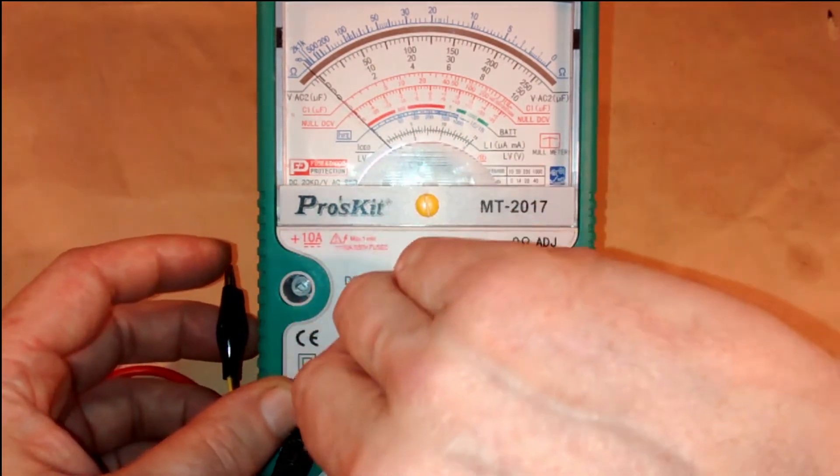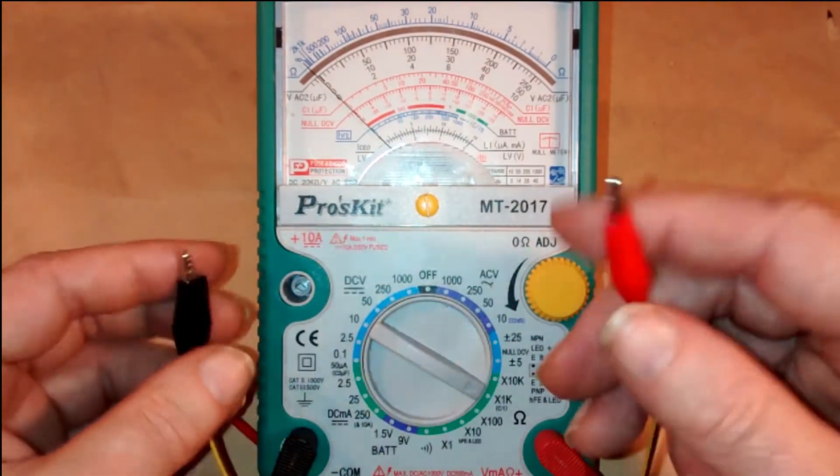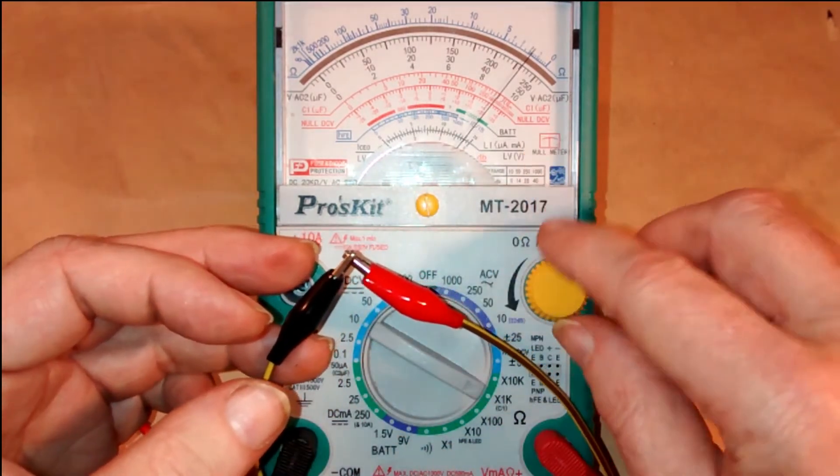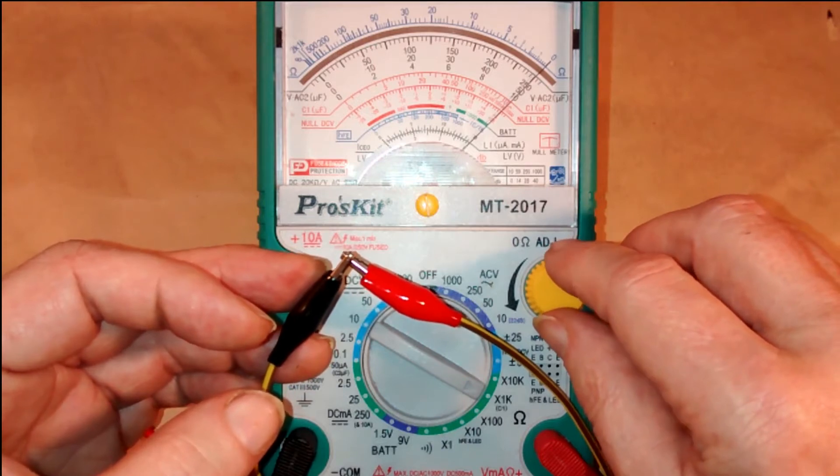So as we're going to use the ohm setting, first thing we need to do is to short out the leads and use the zero ohm adjust to zero the meter.